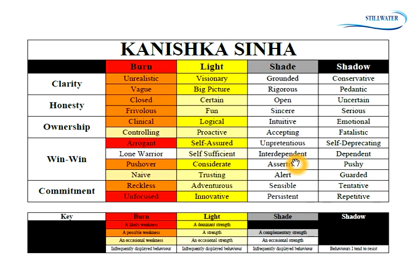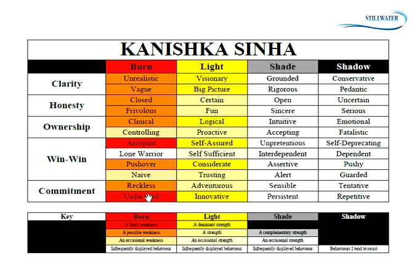If assertiveness were a darker gray — a well-developed strength — then the burn wouldn't be dark orange; it would be very light orange. Where a cell is white, it means I haven't developed that strength at all. The reason I haven't developed it is because I'm afraid I'll start displaying the shadow behaviors. Shadow behaviors are those I really resist in others and in myself. In my urge to avoid them, I sometimes overcompensate and go into my burn. For example, when being persistent, it feels repetitive and boring, so I run away from it and become unfocused.